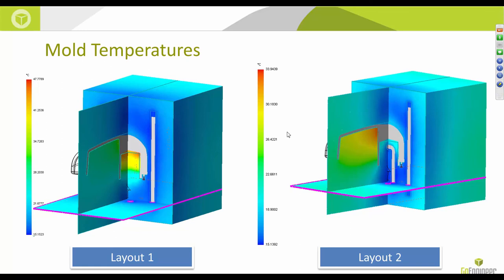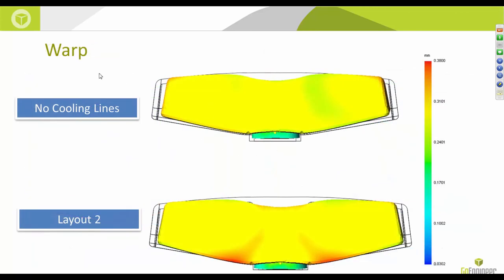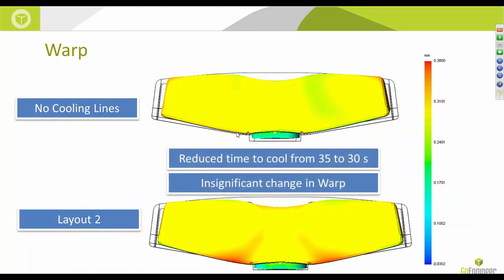Adding the cooling lines improved cool times in these regions — reducing cooling time in the first circuit from about 35 to 33 seconds, and layout two shows a 5-second cooling time saving. However, there's still a large temperature differential between the thick sections and thin areas of the valve grip. As for warpage: the rates are similar between both layouts, but the in-plane warpage is reduced while the Y-direction warpage has remained the same.